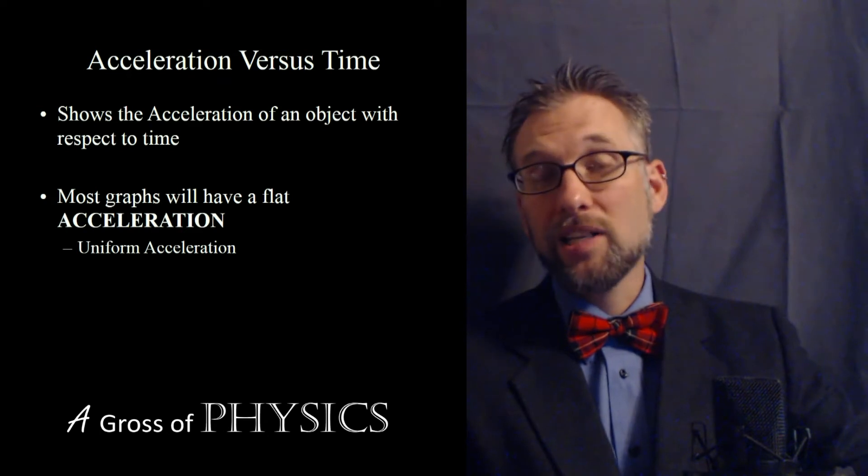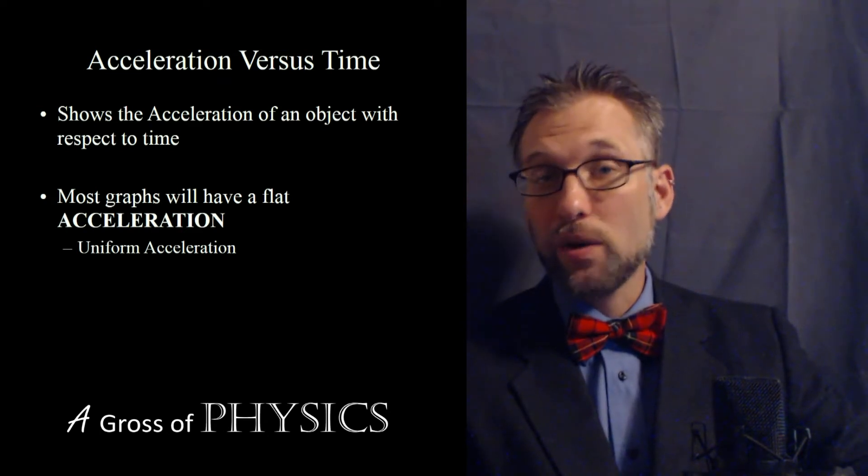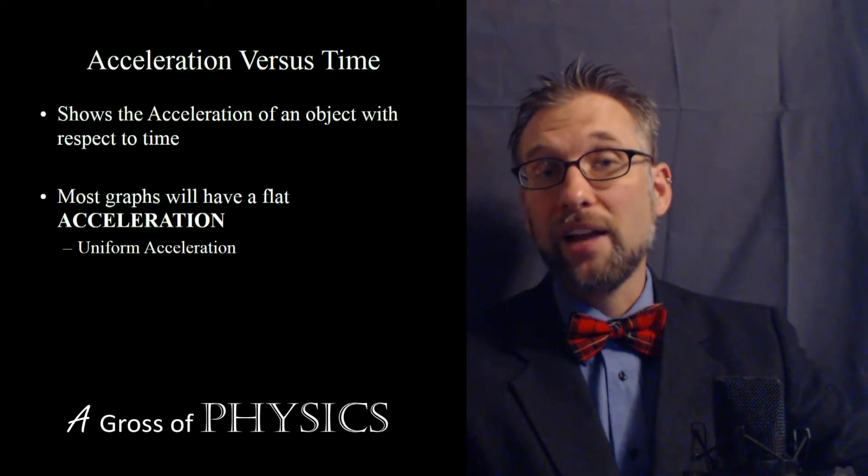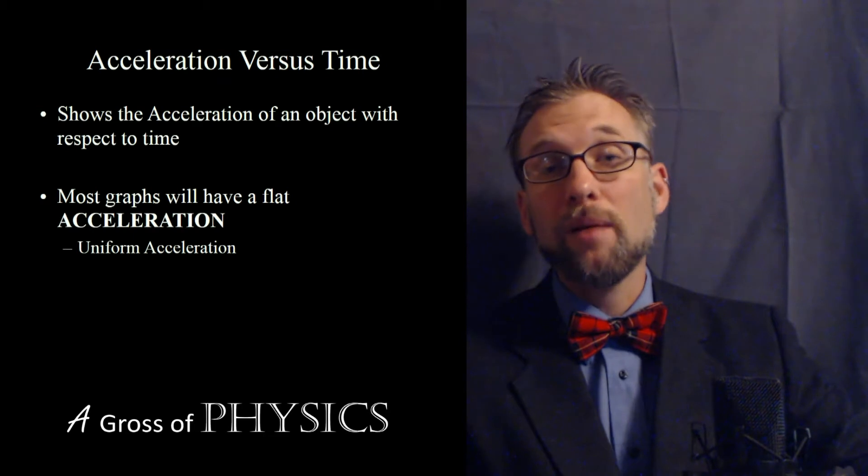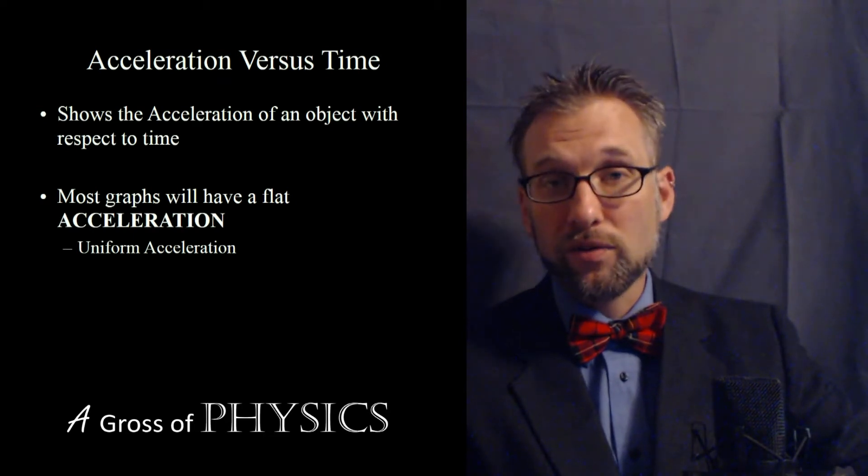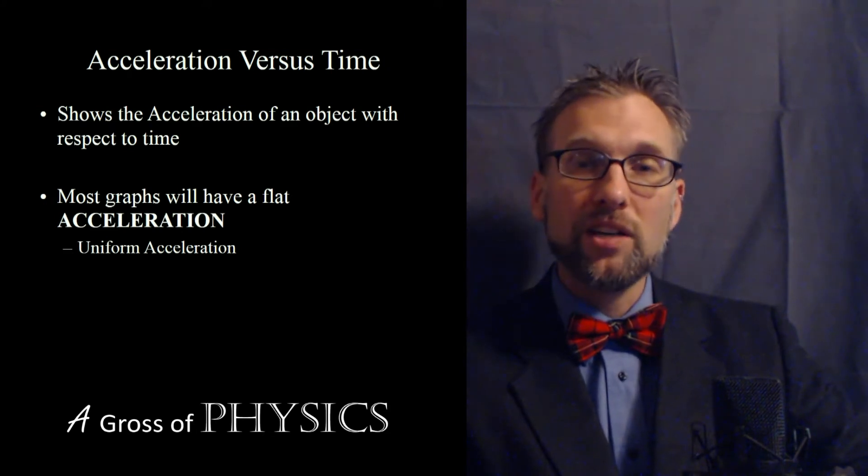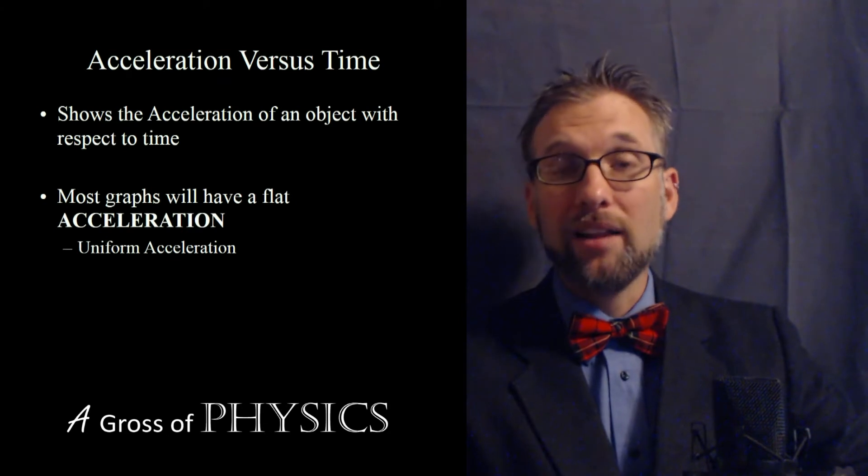Now if we're accelerating in a positive direction it'll be a flat line above the axis. If we have no acceleration or we have a constant velocity it'll be a flat line of zero. If we have negative acceleration, which will be most of the problems we deal with, free fall or objects falling near the surface of the moon, for example, anything falling in the earth's gravitational pull, it will be negative. It will be below the axis and it'll be a flat line at negative 9.8 meters per second squared.